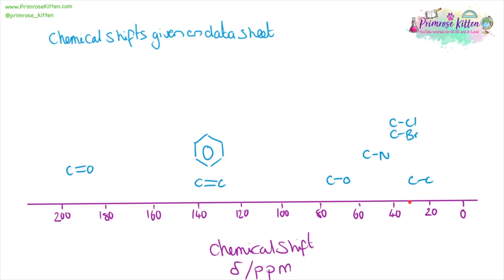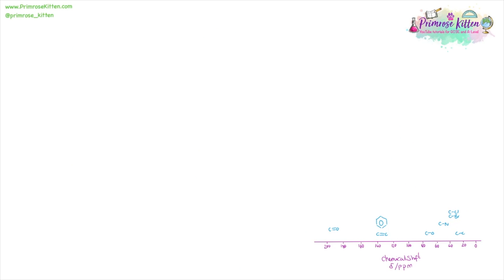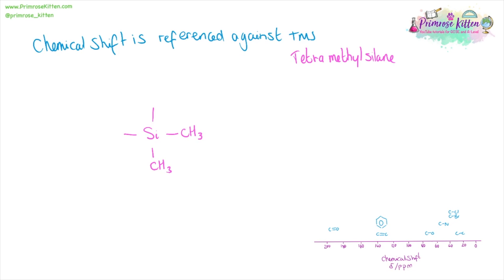Chemical shifts are gonna be given on the data sheet, but you should be familiar with reading them. Things over on the far left are generally gonna be a carbon double-bonded to oxygen, in a different place to a carbon bonded to a single oxygen. Chemical shift is referenced against the standard TMS, tetramethylsilane.